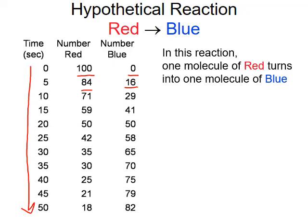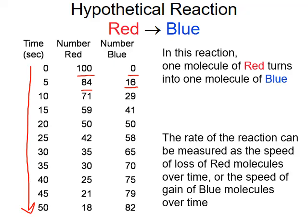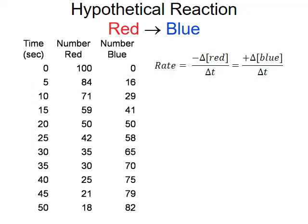The reaction continues in the same fashion. For every five-second interval, we form more blue and lose the same amount of red. The rates for this reaction can be measured using the speed of loss of the red molecules or the speed of gain of the blue molecules. Mathematically, the rate equals the negative of the change in red over the change in time, or the positive of the change in blue over the change in time. We can use these formulas to calculate the average rate for any time interval.